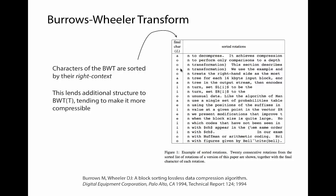Another way of saying what the BWT does is that it sorts the characters of T by their right context - by the text that comes right after them in string T. This is what makes it more compressible. If like characters are coming together into runs, we can find a very concise way of storing this data. For example, run-length encoding lets us store just one character and a count of 100 instead of 100 repeated characters. So the Burrows-Wheeler transform, because it sorts by right context, tends to bring like characters together into runs, and this tends to make the text more compressible.